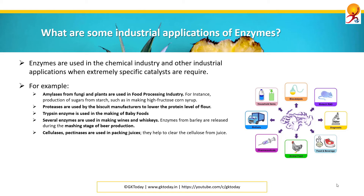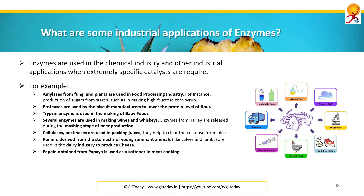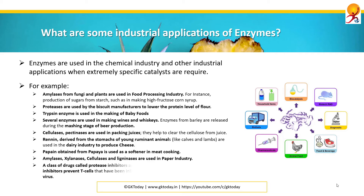They help to clear the cellulose from juice. Renin, derived from the stomachs of young ruminant animals like calves and lambs, is used in the dairy industry to produce cheese. Papain, obtained from papaya, is used as a softener in meat cooking. Amylases, xylanases, cellulases, and lignolases are used in the paper industry.